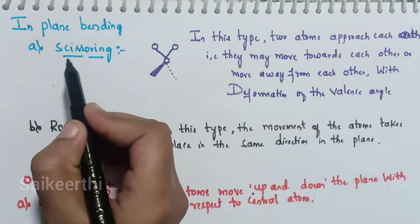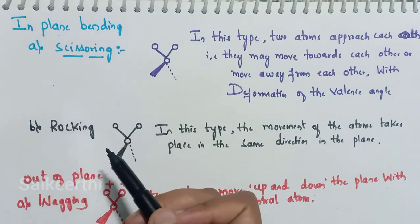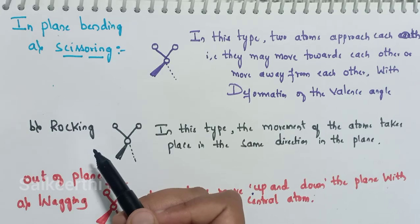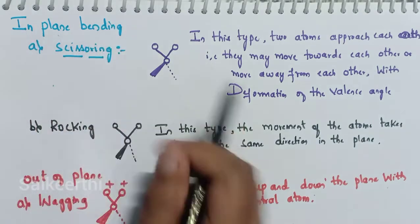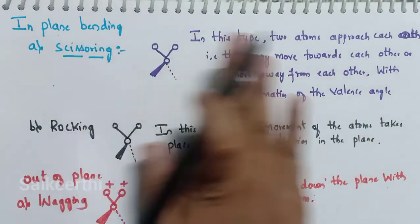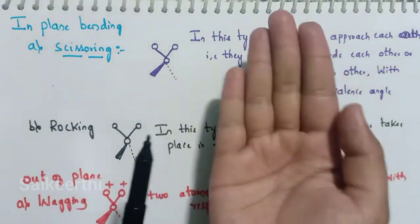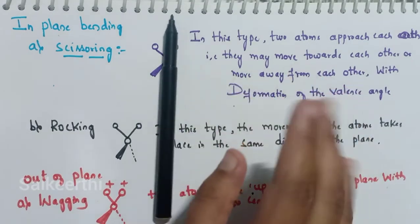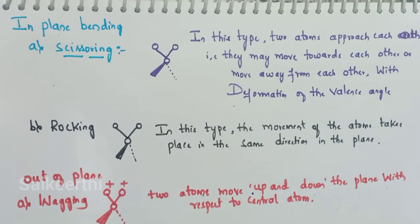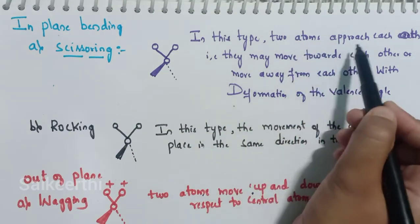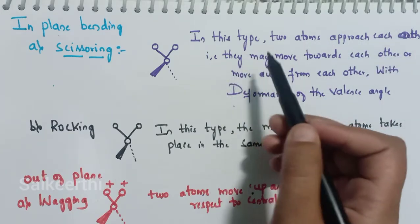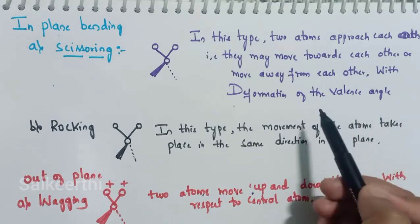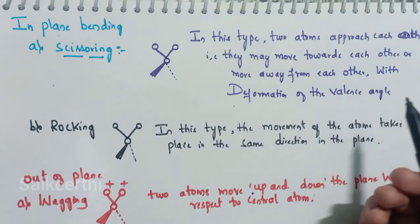In-plane bending includes scissoring and rocking. These occur on the plane only — not above or below the plane. In scissoring, two atoms approach each other or move away from each other, so the deformation of the bond angle takes place.